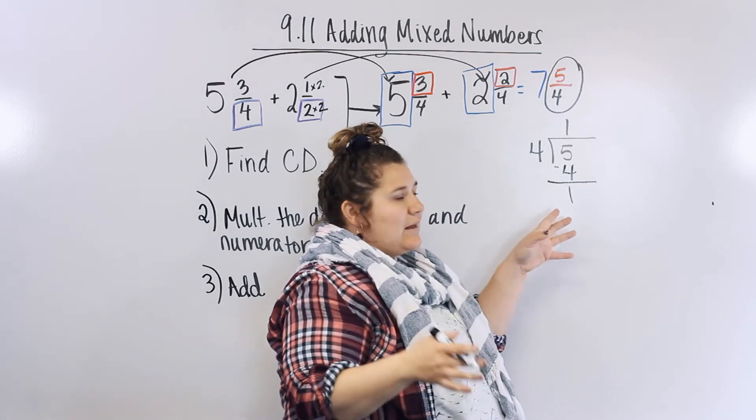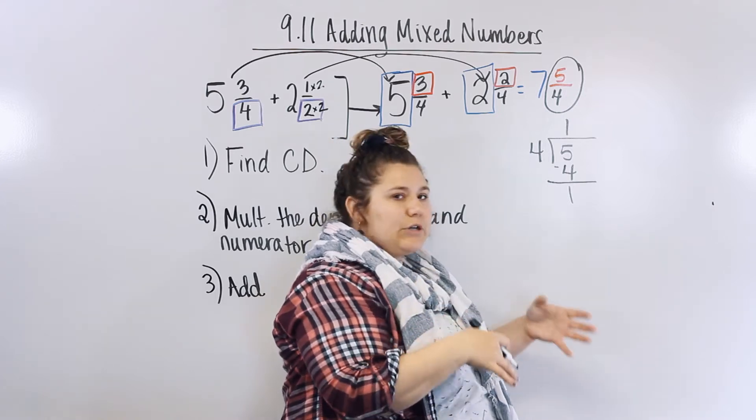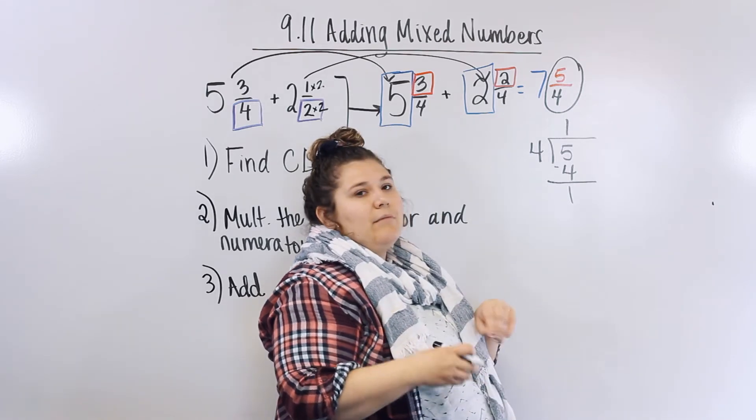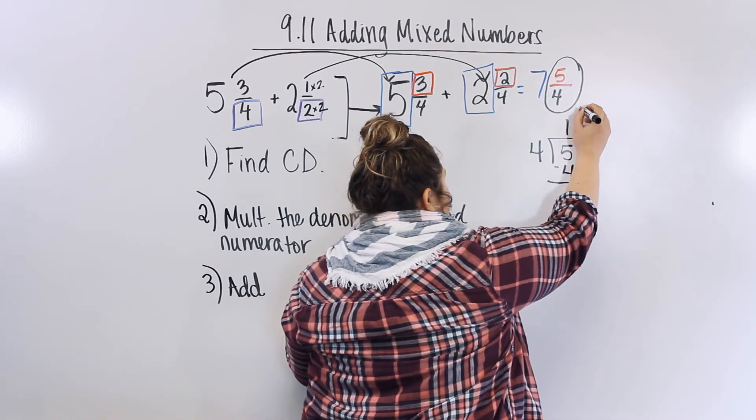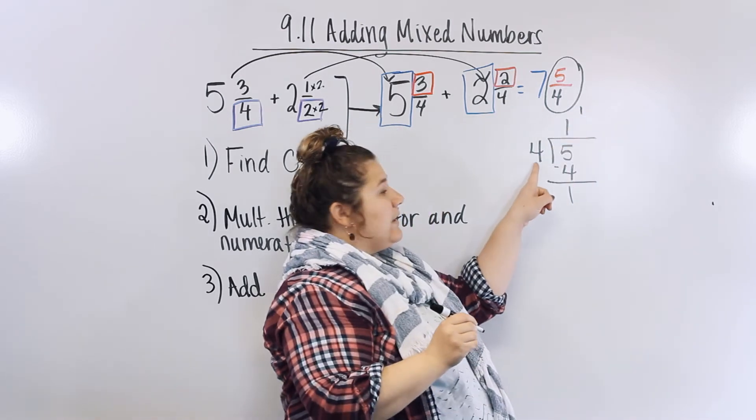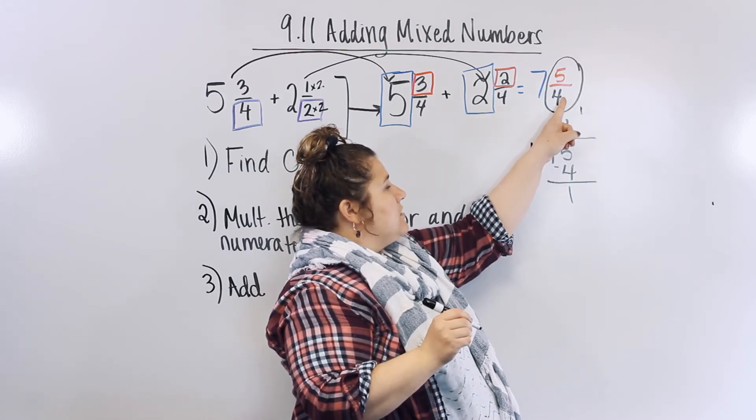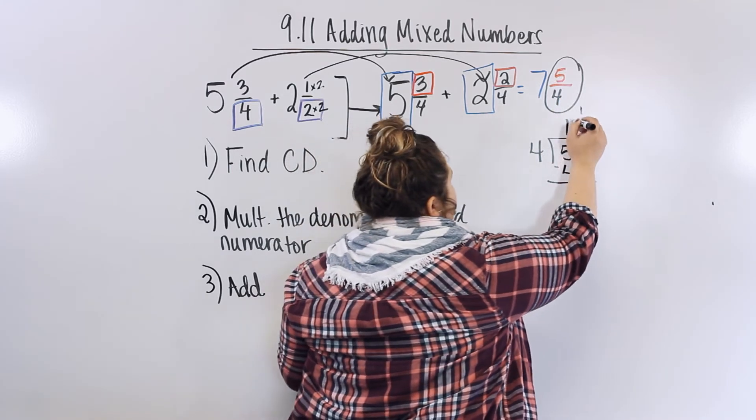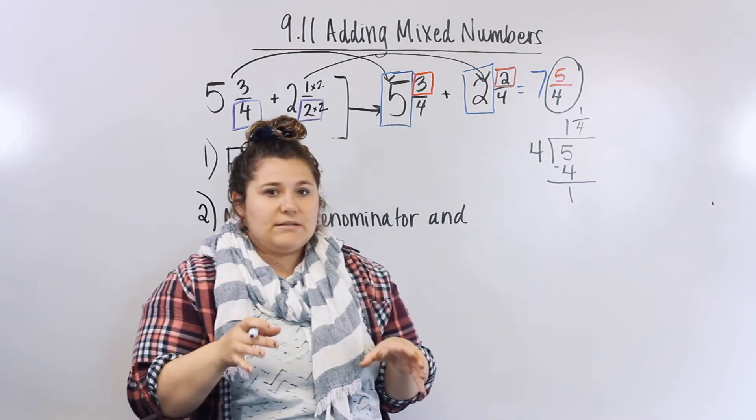4. Now, instead of making it a decimal like we did a few sections ago, that's going to become our new numerator up top. We keep our denominator still the same. Our divisor and our denominator are the same thing. We're going to keep it that way. And there's our new mixed number.